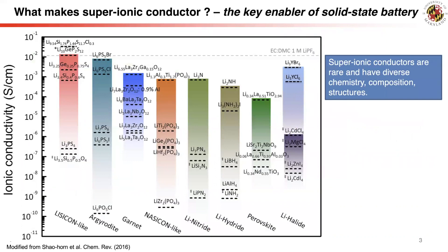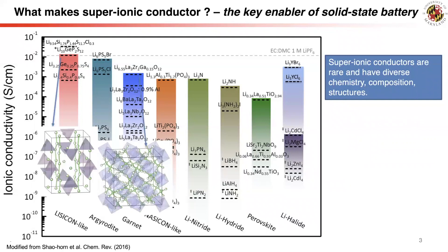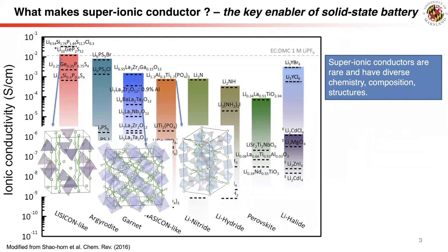A few commonly known examples of superionic conductors include thio-LISICON and LGPS, lithium garnet LLZO, and NASICON-type LATP.